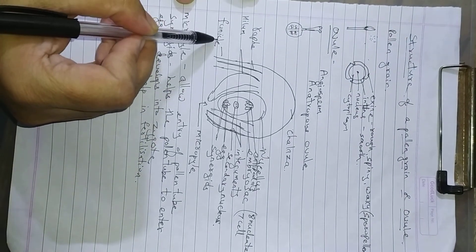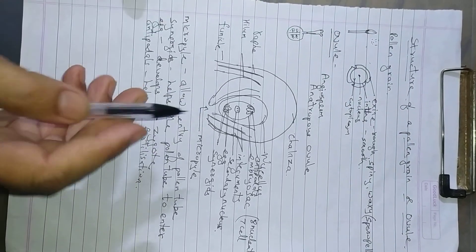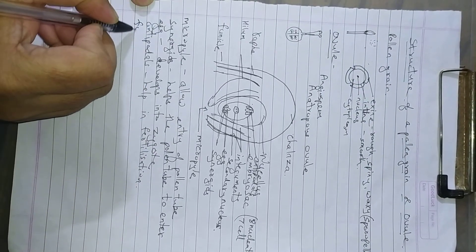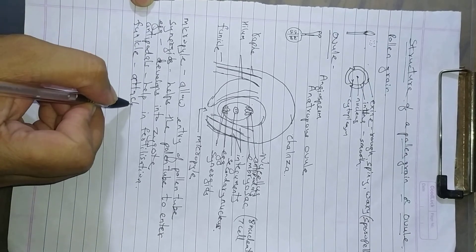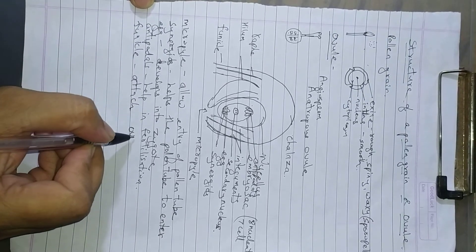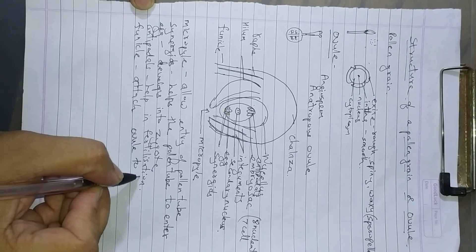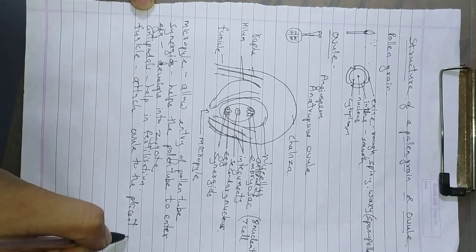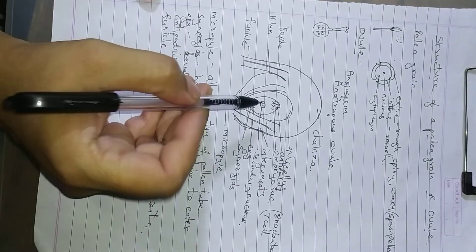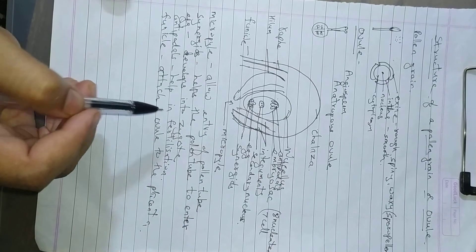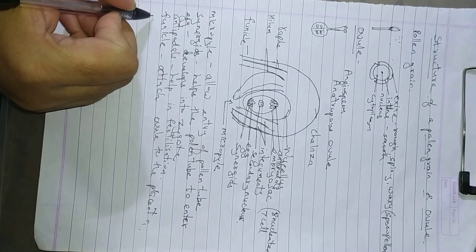The funicle, it attaches the ovule to the placenta. Secondary nucleus develops into the endosperm.